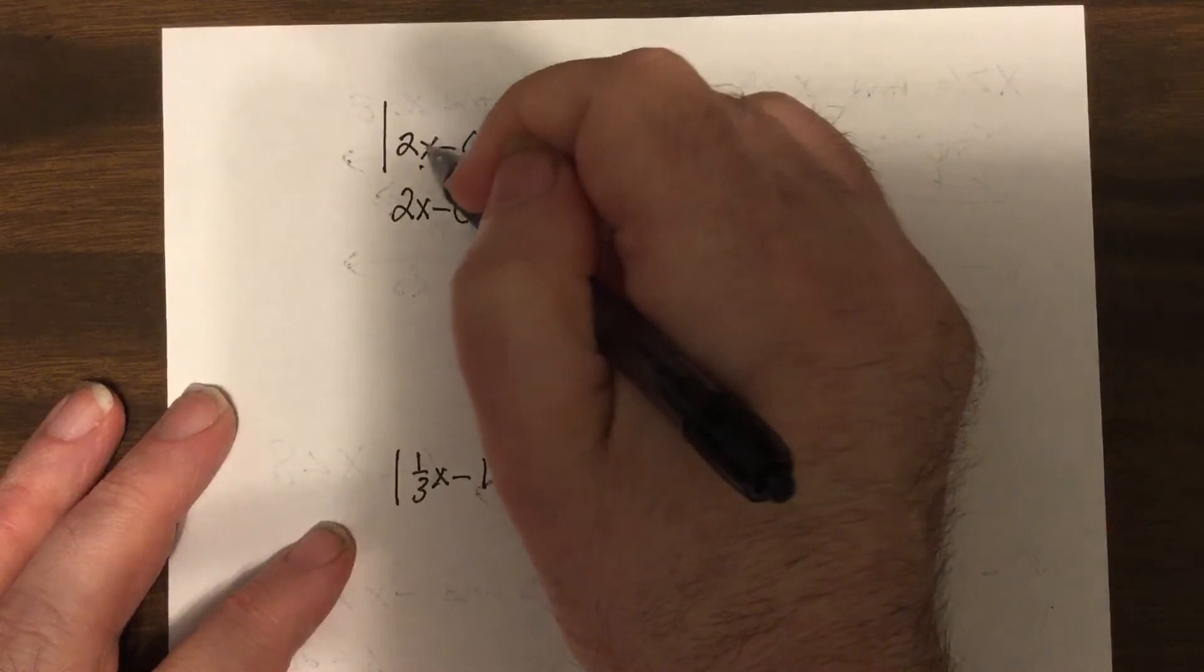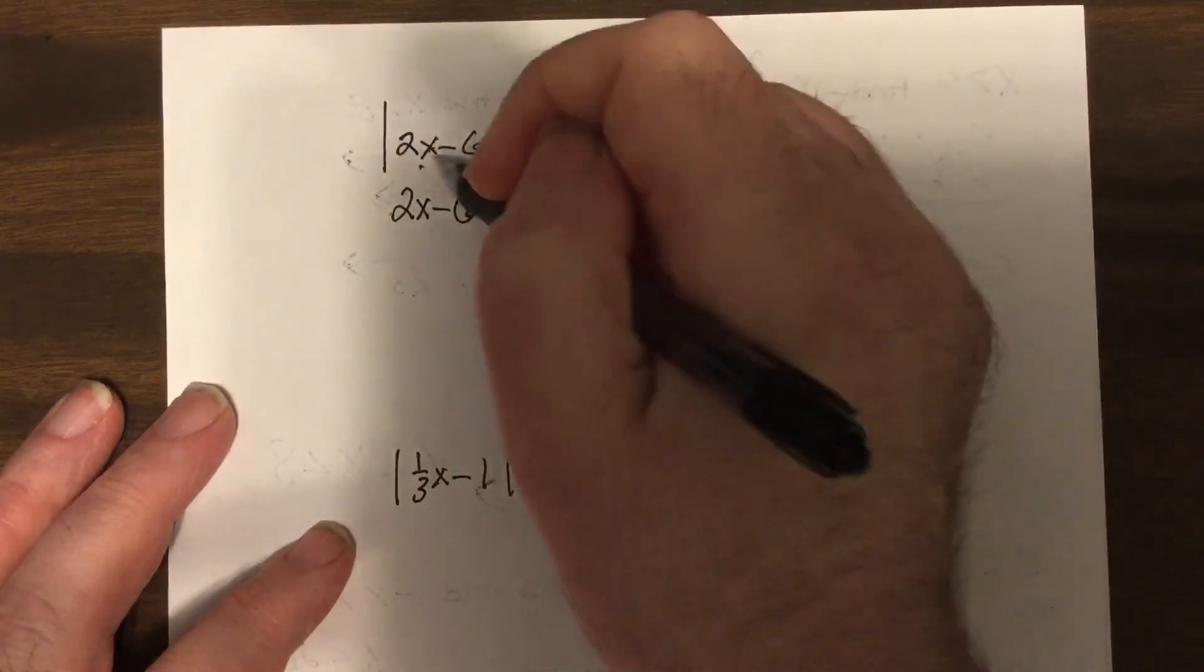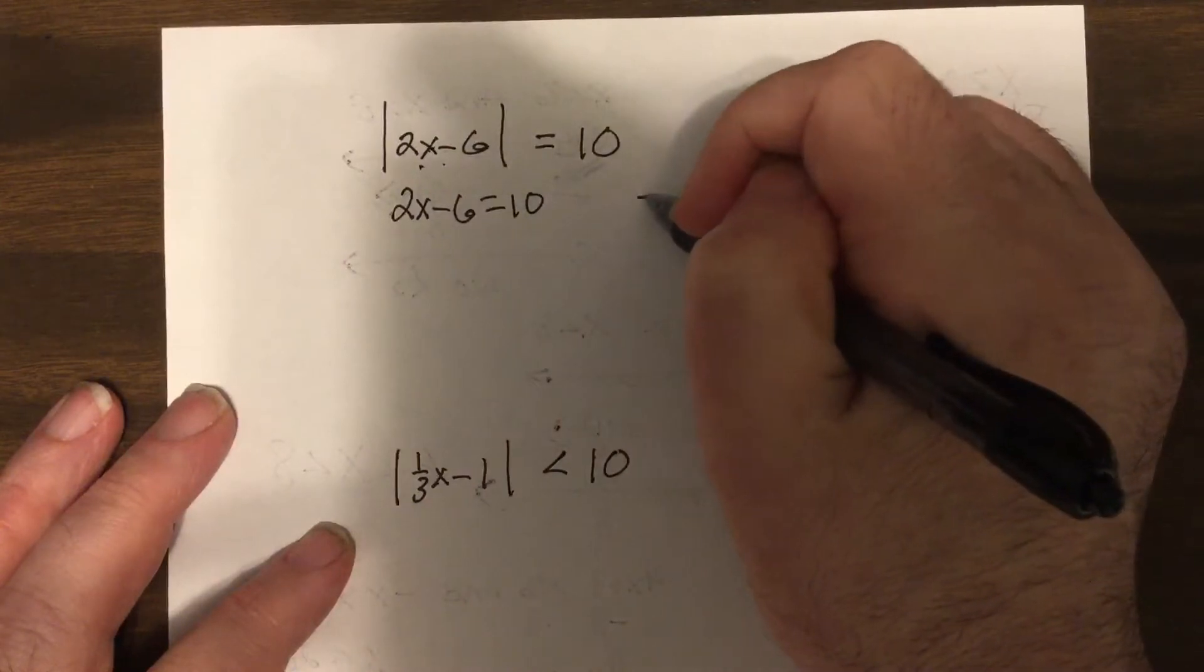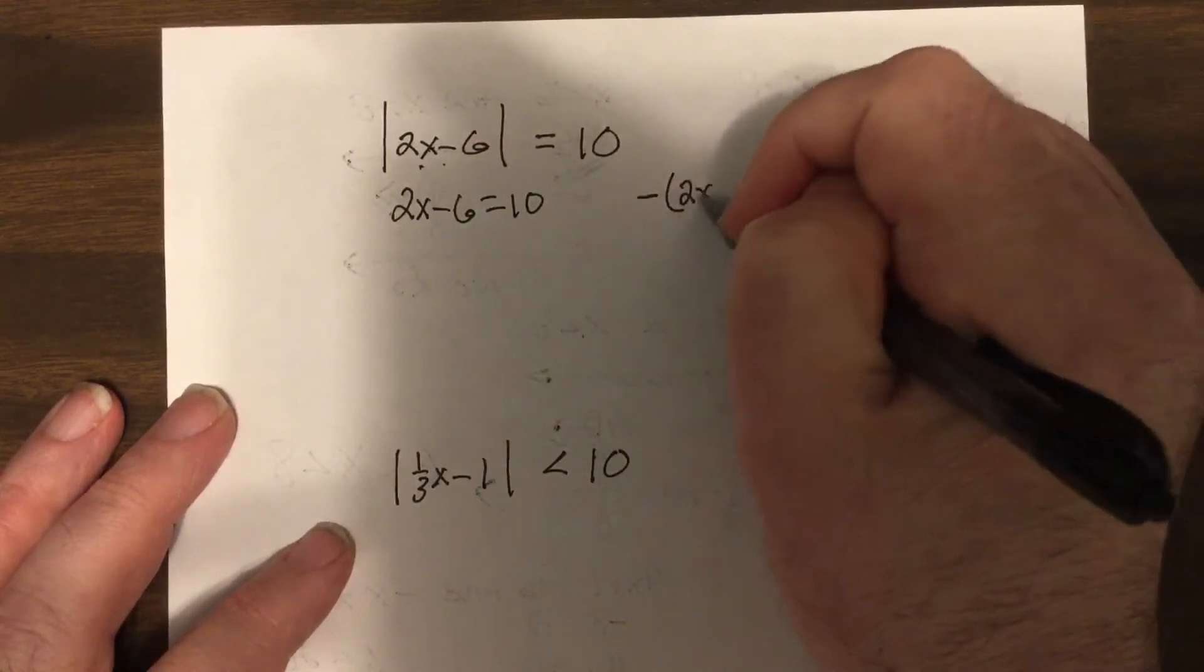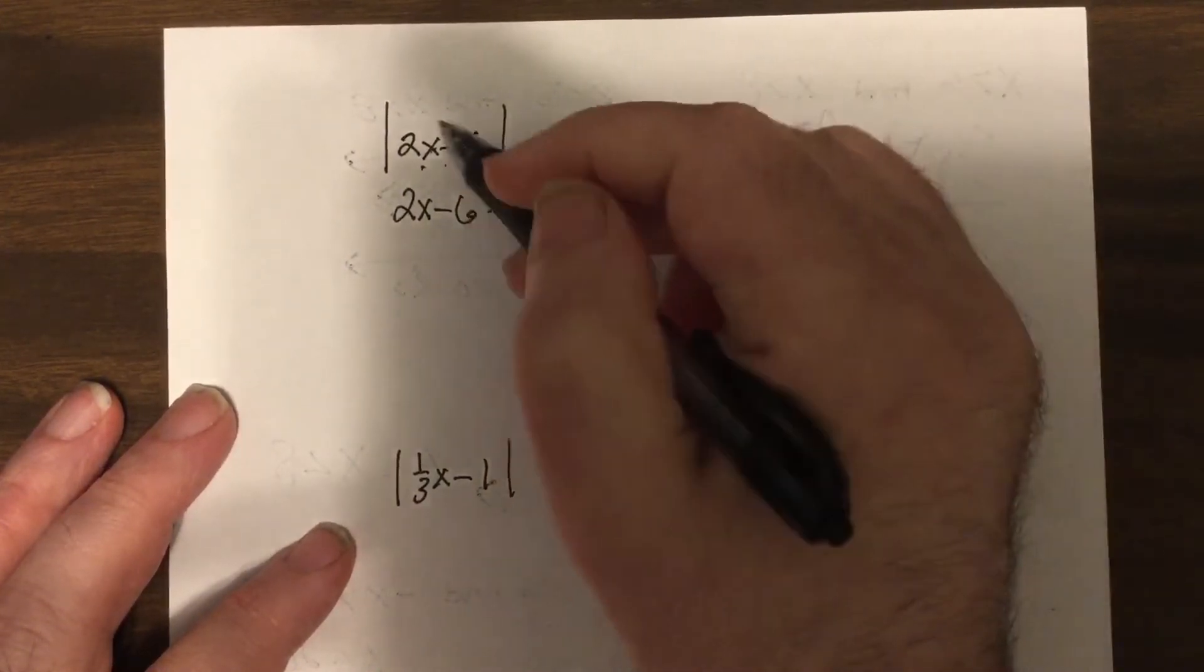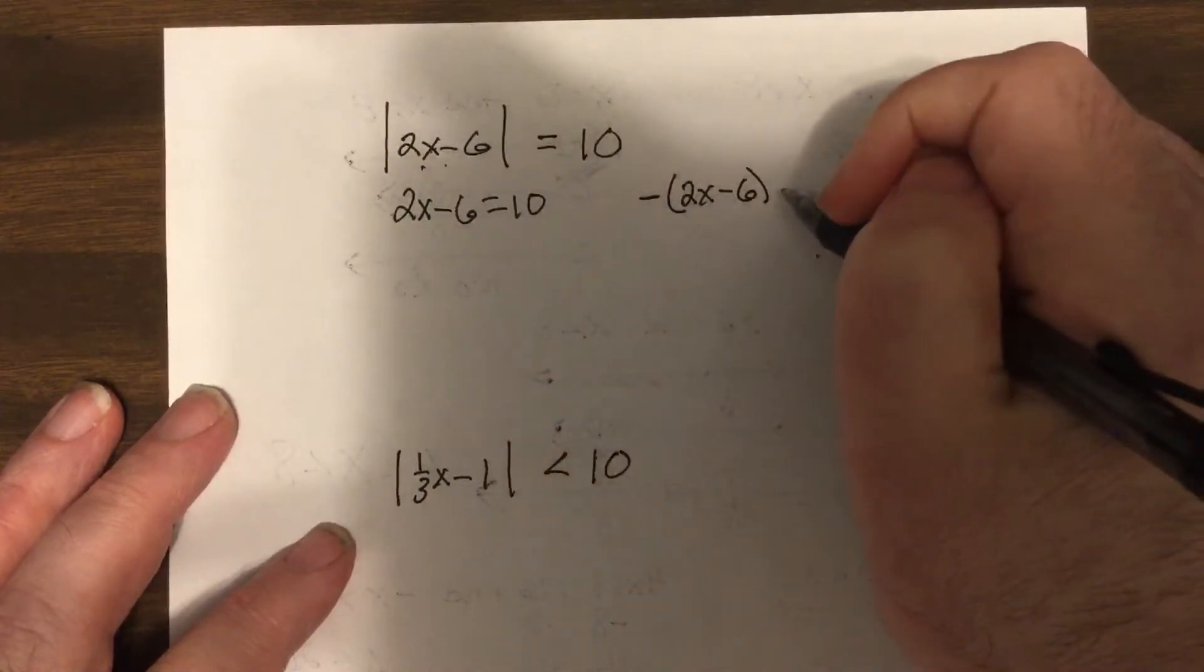of when the inside would be positive when you put a number into the variable. Then you take the opposite to take care of what happens when you put a number into the variable and the inside's negative.